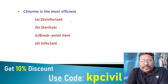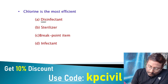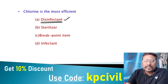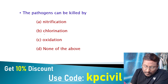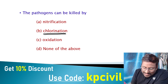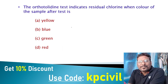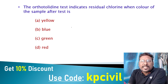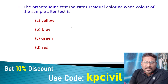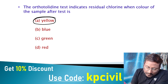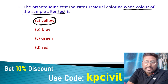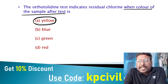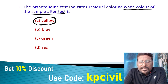Chlorine is the most efficient disinfectant. Pathogens can be killed by chlorination. The orthotolidine test indicates residual chlorine when the color of the sample after the test turns yellow. Yellow color indicates the presence of residual chlorine.